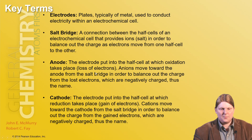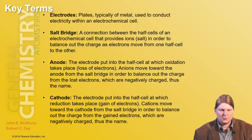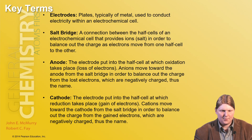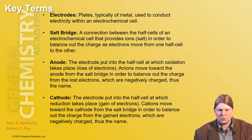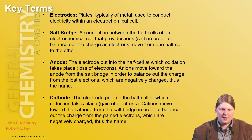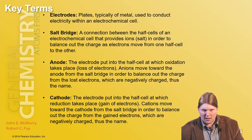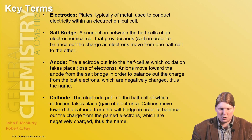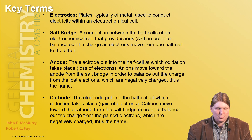Electrodes are plates, typically metals, used inside an electrochemical cell to conduct electricity. Sometimes they're chemically active, sometimes they're not. A salt bridge is a connection that provides ions to balance out charges as electrons move from one half cell to another. And that's where the names anode and cathode come from — the anode is the side that anions move to.